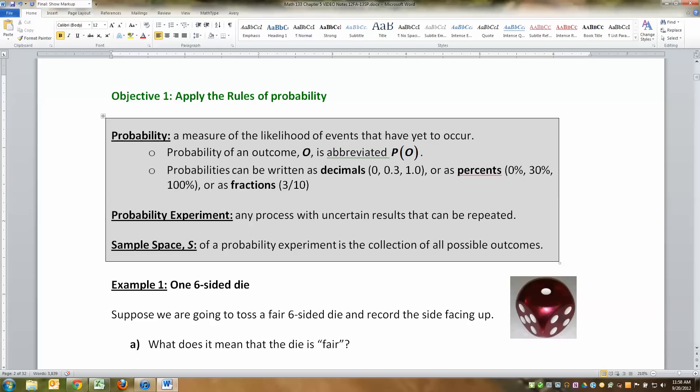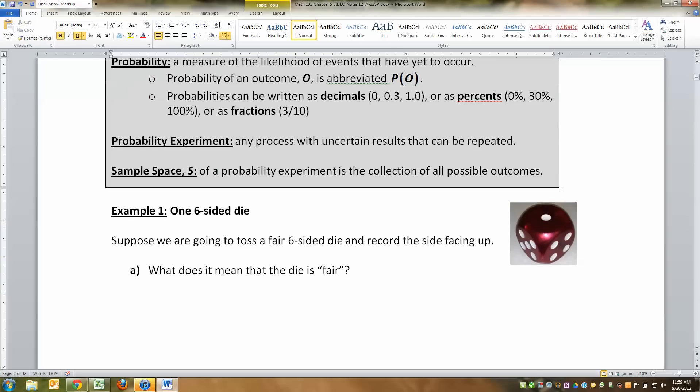All right. So with that said, let's think about dice. We have to get some definitions under our belt. First thing we want to know is probability. Probability for our purposes is the measurement of the likelihood of events that may have yet to occur. We are going to be talking about things that are in the future. Probability of an outcome O is abbreviated P(O). Probabilities can be written as decimals, percents, or fractions. We will tend to write them as decimals most of the time, but not always. A probability experiment is any process with uncertain results that can be repeated over and over. And a sample space is the collection of all possible outcomes.